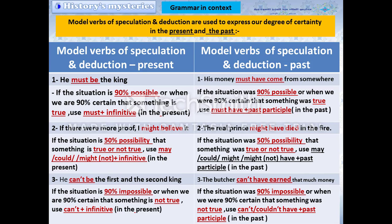Number 3: 'He can't be the first and the second king.' If the situation is 90% impossible, or when we are 90% certain that something is not true, use can't plus infinitive in the present. In the past: 'The butcher can't have earned that much money.' If the situation was 90% impossible, use can't or couldn't plus have plus past participle.